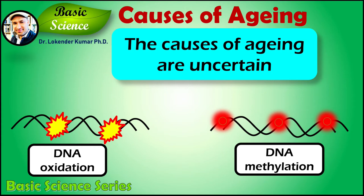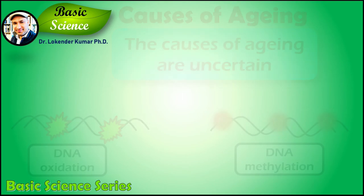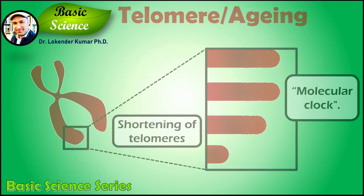The cause of aging is uncertain. Certain theories are assigned to the damage concept, whereby the accumulation of damage such as DNA oxidation may cause biological systems to fail, or to the programmed aging concept, whereby internal processes such as DNA methylation may cause aging.